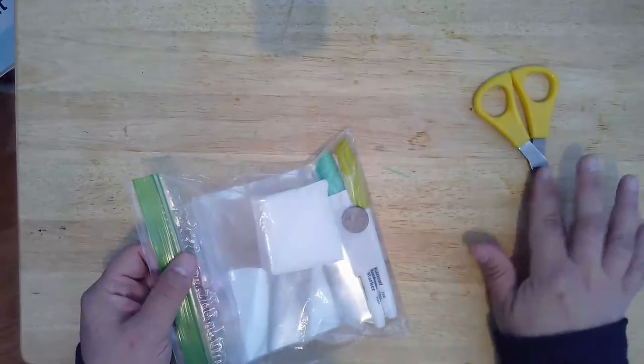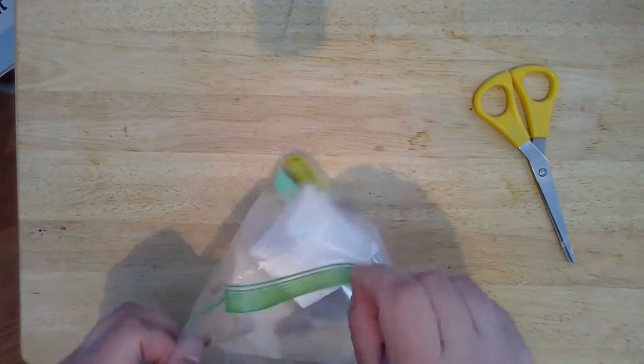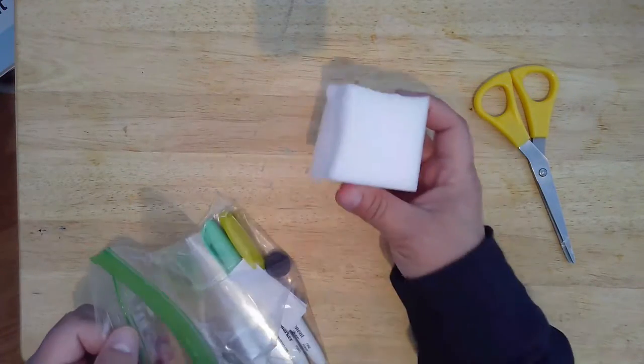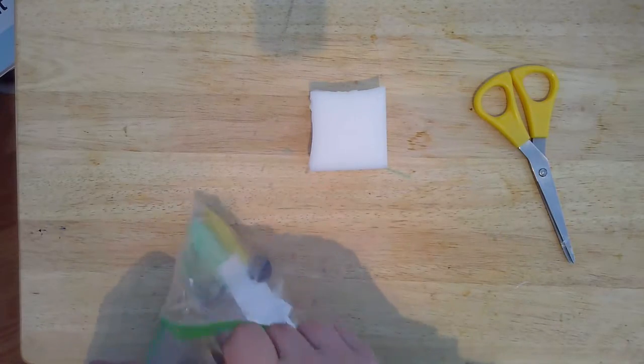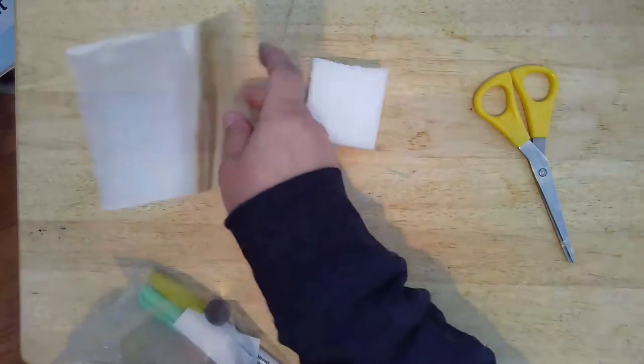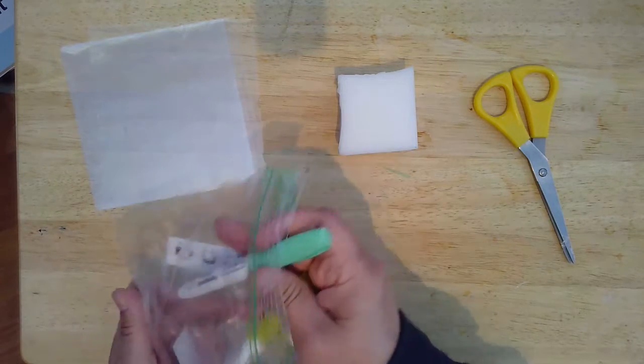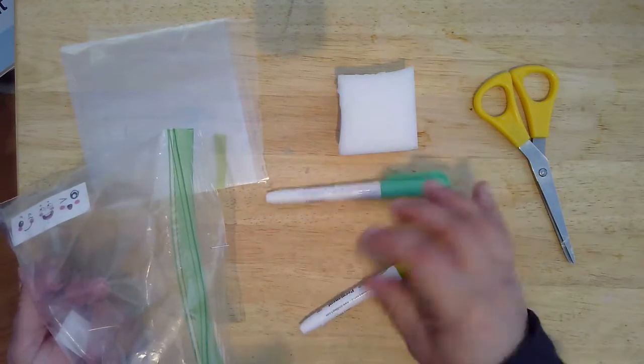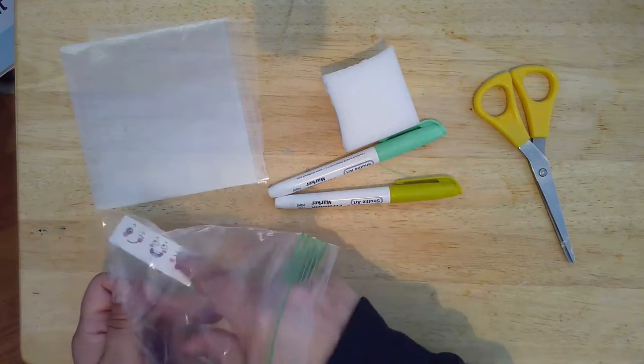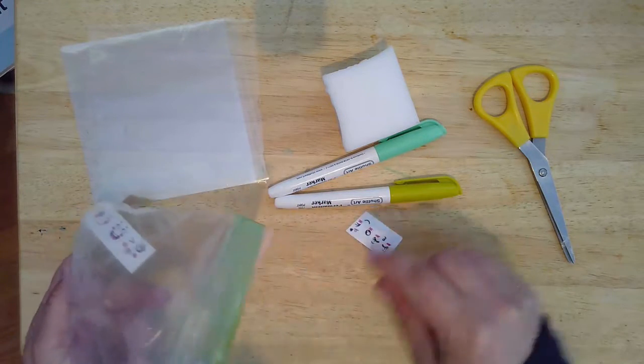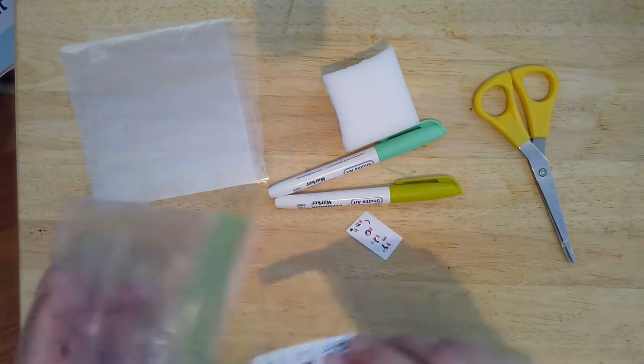In your kit, you will receive a block of foam, some candy wrappers, a couple of permanent markers in two different colors, some face stickers.